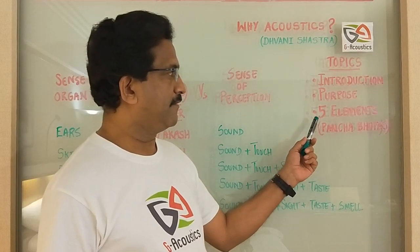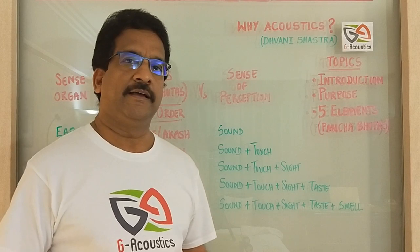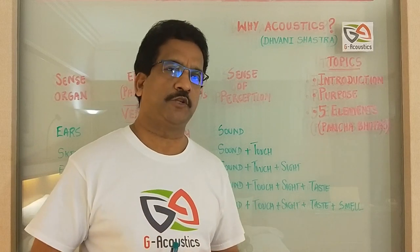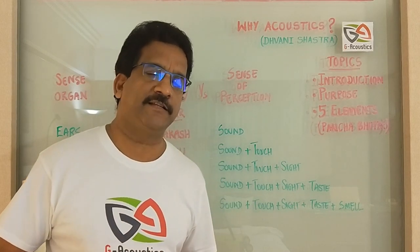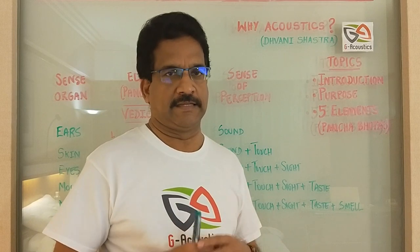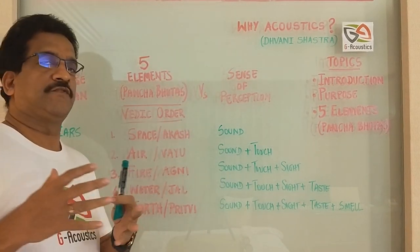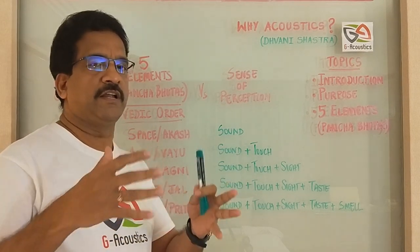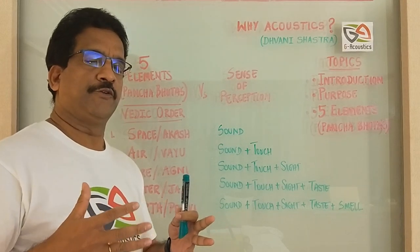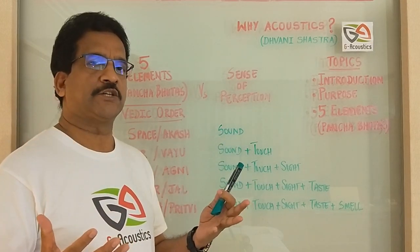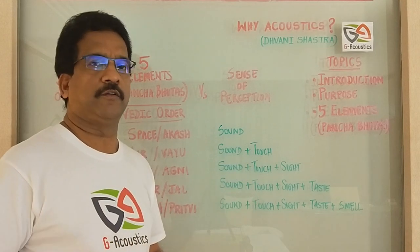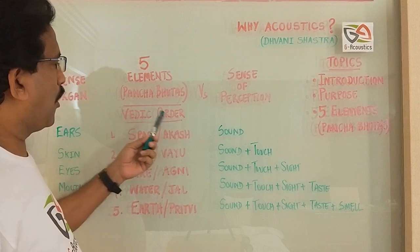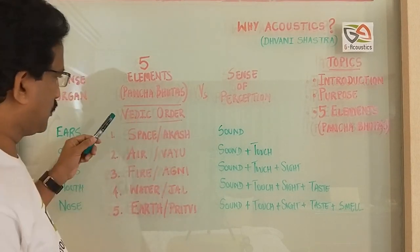Coming to the third topic — the five elements, called Panchabhutas. I would like to talk about Panchabhutas because there is a special significance of sound and acoustics within it. These five elements are called physical or basic elements, and they are spoken of not only in Indian literature but also in various other scriptures from other parts of the world. There is a specific order — the Vedic order — of these five elements.